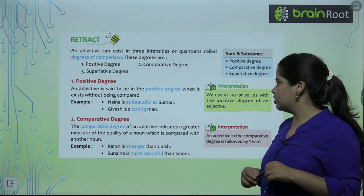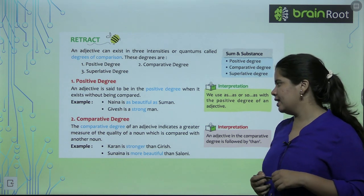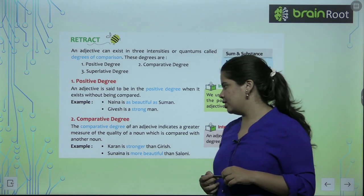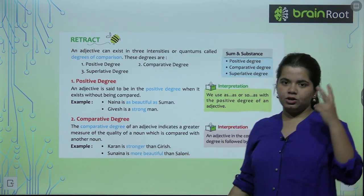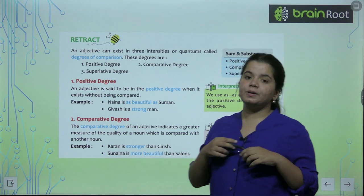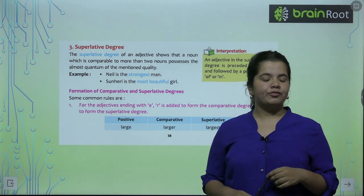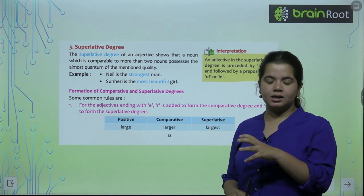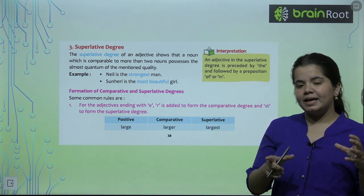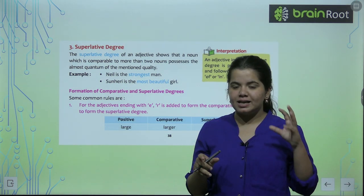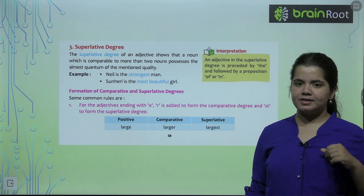Second is comparative degree. When we compare one noun with another noun, like 'Karan is stronger than Girish' or 'Sunaina is more beautiful than Saloni,' we use comparative degree. Remember that a comparative word is always followed by 'than.' So when I use 'more beautiful,' I also use 'than' — you have to remember that.